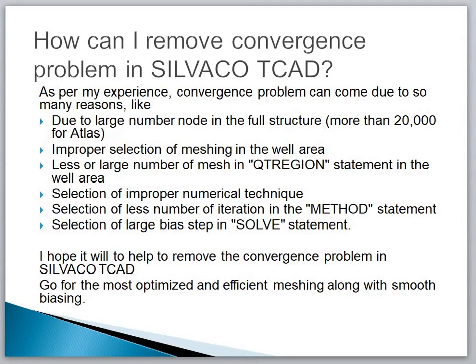The fifth cause is selection of too few iterations in the method statement. If you are taking a small number of iterations you will find the convergence problem. The sixth cause is selection of a large voltage step in the solve statement. If you are not increasing the VDS voltage gradually you will find this type of error. You must take the VDS voltage step by step — for example: 0, 0.01, 0.1, 0.3, 0.5. You cannot jump from 0 to 0.5 to 1 VDS voltage. The main basic point to remove this error is to go for optimized and efficient meshing along with smooth biasing voltage VDS.